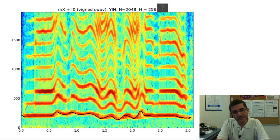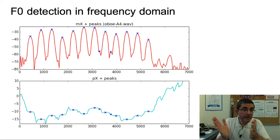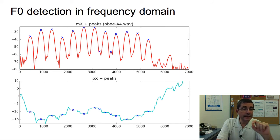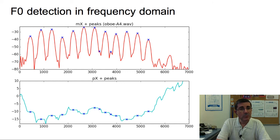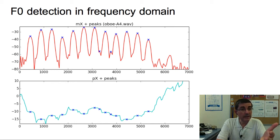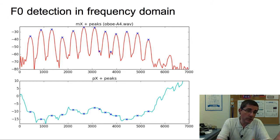What is the fundamental frequency in a spectrum? We have seen how to identify the sinusoids and the partials of a sound. For example, on the oboe sound, these crosses are the peaks, and many of them correspond to partials or harmonics of the sound. But which of these peaks — or maybe some other part of the spectrum — is the fundamental frequency? How can we identify the partials that are harmonic, and then from this information identify which frequency is the fundamental frequency of these partials?